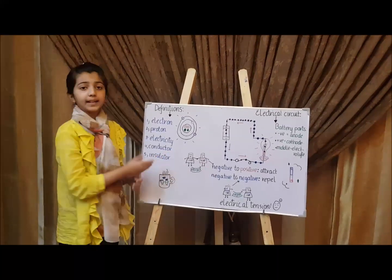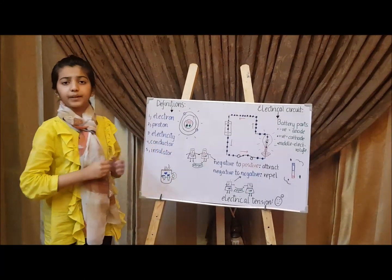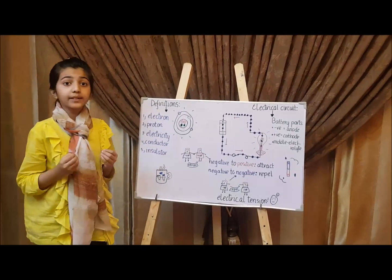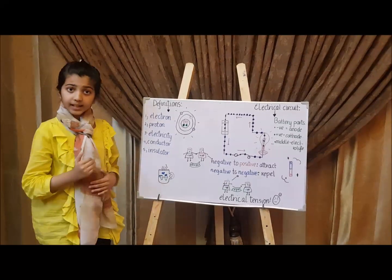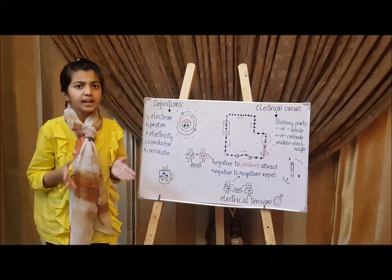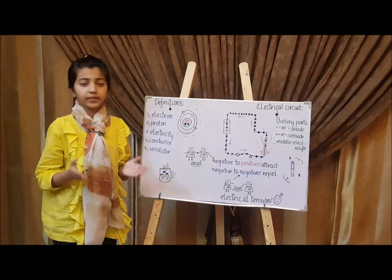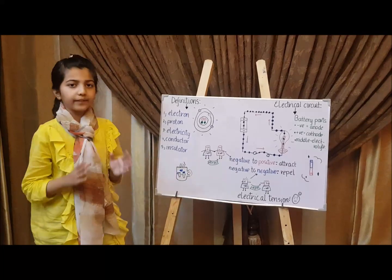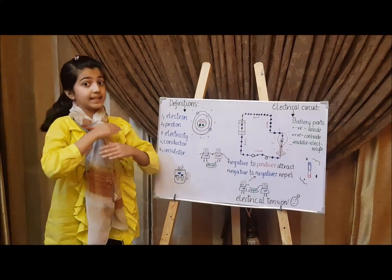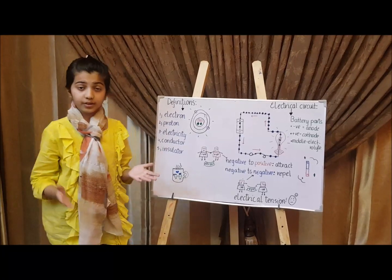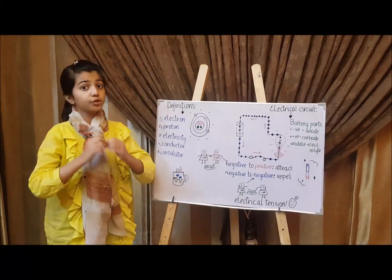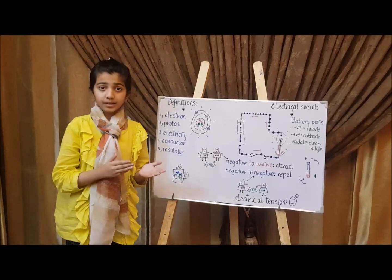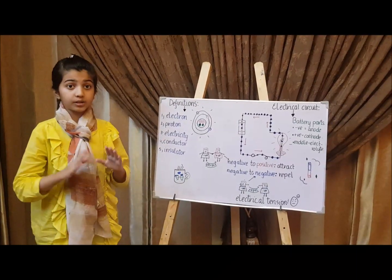Let's come to conductors and insulators. You can tell a lot about them only by reading their names. A conductor is a material which allows electricity and heat to pass through them very easily, and they're mostly metals. But carbon and water are also very good conductors. Insulators are the exact opposite of conductors — they are materials that do not allow heat or electricity to pass through them at any point, and they're not metals.